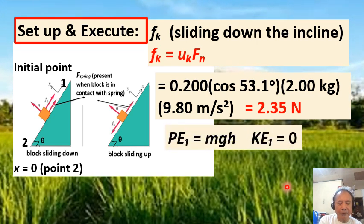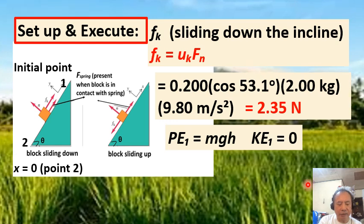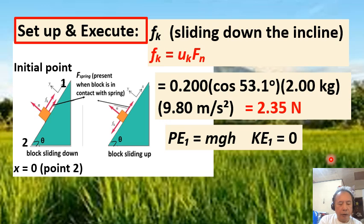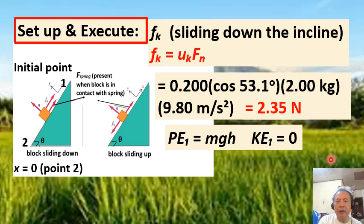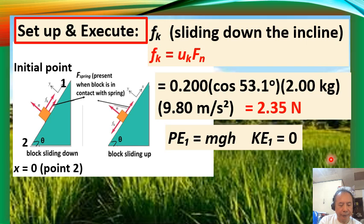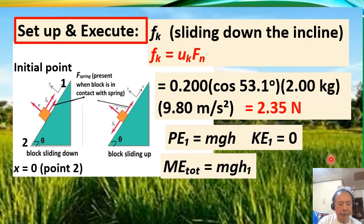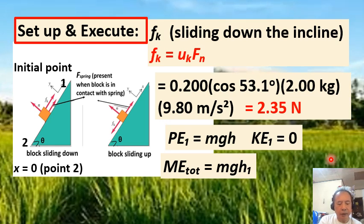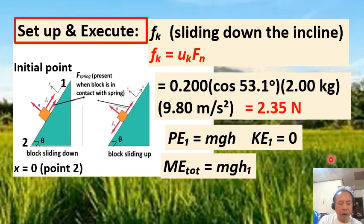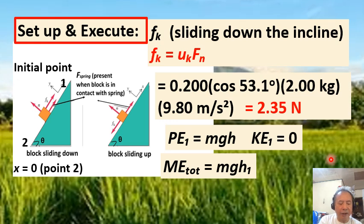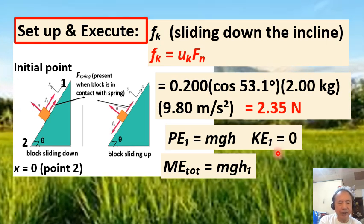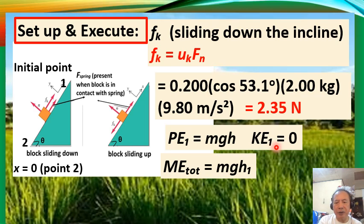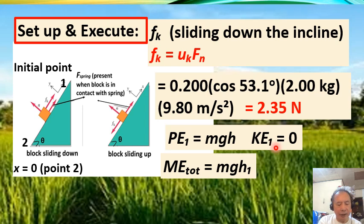Since the spring force is not constant, we use the energy method for the next succeeding workings. At the initial position, point 1, the block has zero kinetic energy since it started from rest — initial speed equals zero, hence kinetic energy of the block is zero.